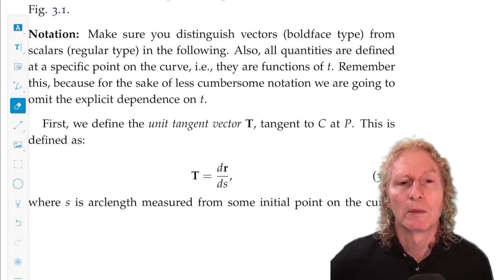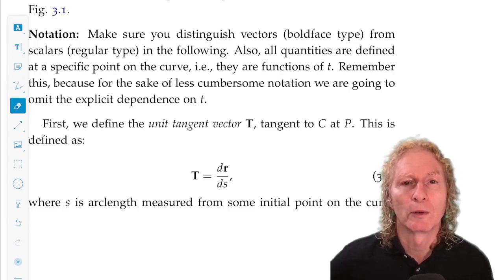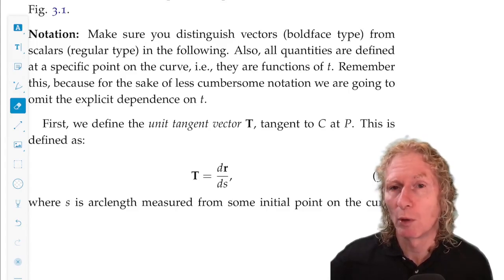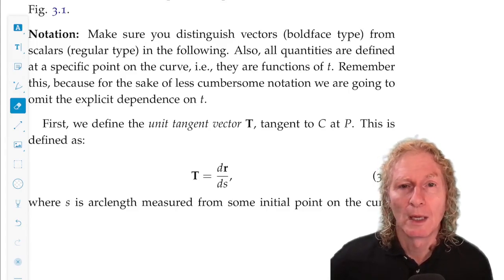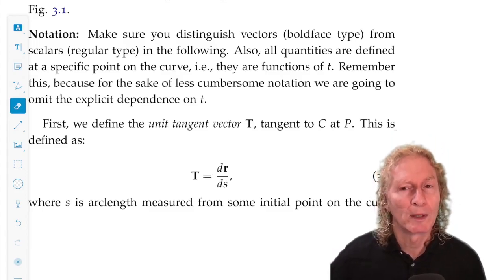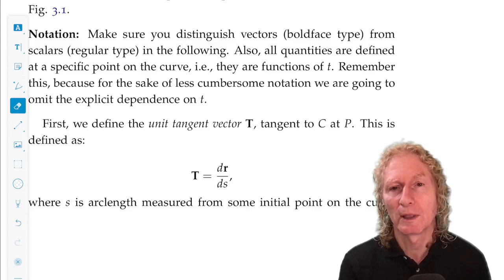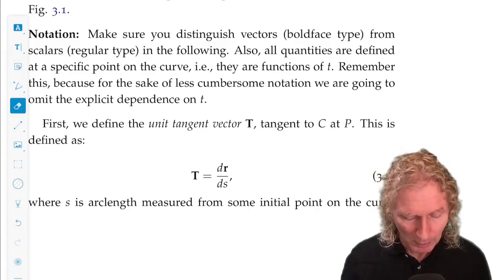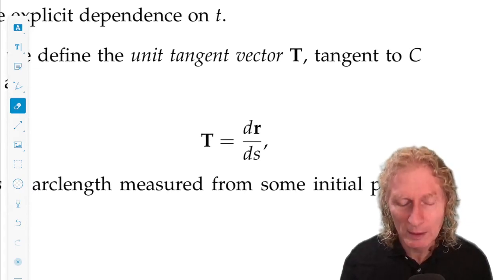So the first unit vector we're going to construct is the unit tangent vector we're going to call uppercase boldface T. And it's going to be the derivative of the space curve with respect to the arc length. Now we introduced arc length in the last chapter, we're going to get into it more deeply. But why would this vector be tangent to the curve?